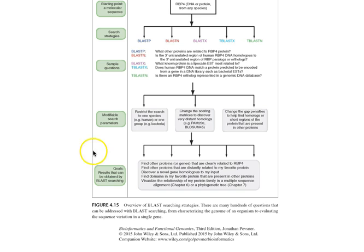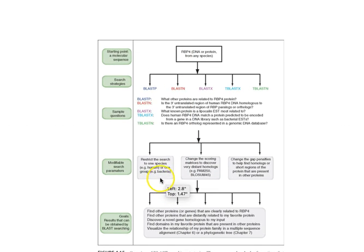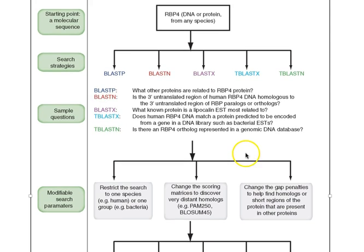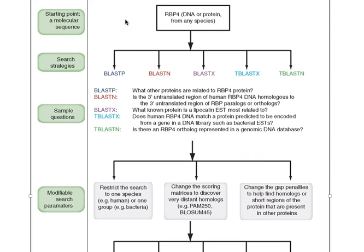And you can. If inside your textbook you're following along, you have RBP4. Who the hell cares what RBP4 is? But I know that if I actually use any one of these search strategies, I can come up with a series of questions. So let's start with BLAST-P. What other proteins are related to RBP4? And if we use expected value scores, you can quickly figure out how close something is. Same thing with nucleotide.